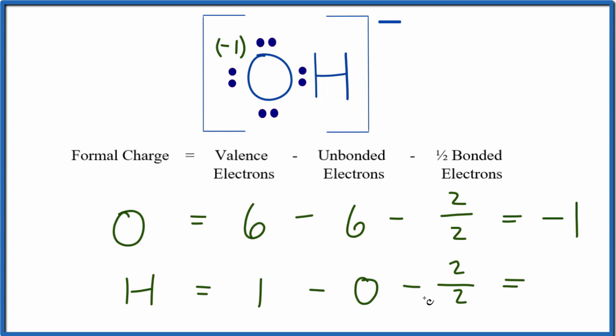And if we subtract one minus zero, minus one, we get zero. And these formal charges shouldn't be surprising. Let's put a zero up here. Because the overall hydroxide ion has a negative charge, so we would expect to see a negative charge on one of the atoms, and that's the oxygen here. So those are the formal charges for OH minus the hydroxide ion.